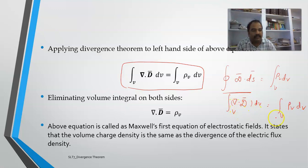Now removing the volume integral on both sides, what I will get? I will get this equal to ρ_v. This is Maxwell's first equation of electrostatic fields which states that volume charge density is equal to the divergence of electric flux density.